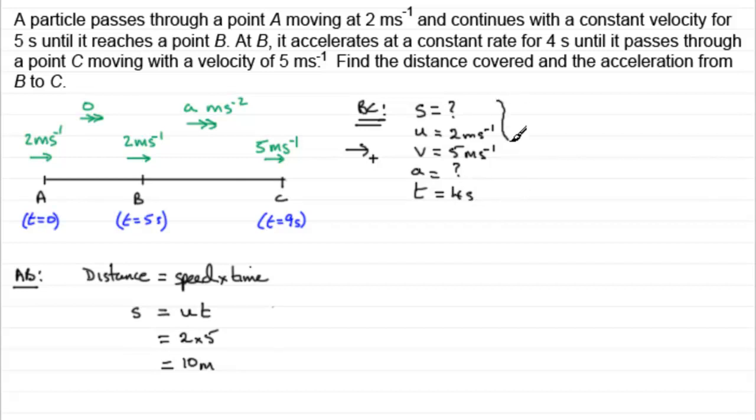So what am I going to use to find out what S is, the displacement from B to C? Well, it's obviously got to be S equals U plus V times the time divided by 2. It's the only equation of the SUVAT equations that doesn't have A in. So we pick that one.